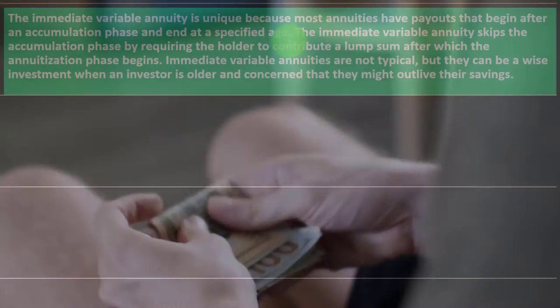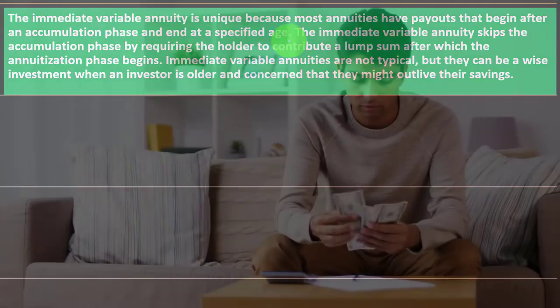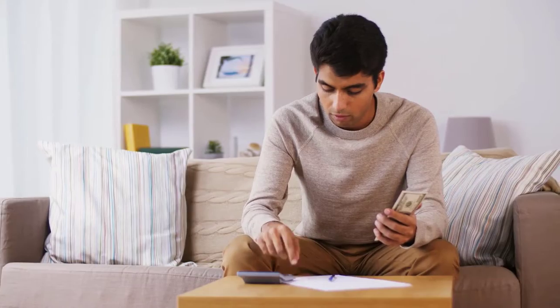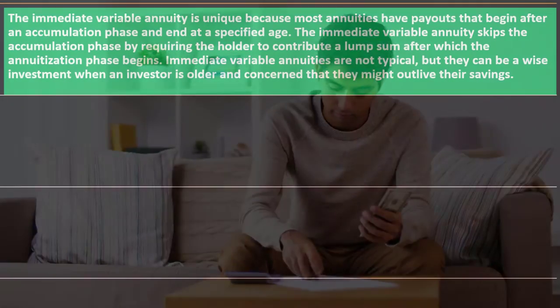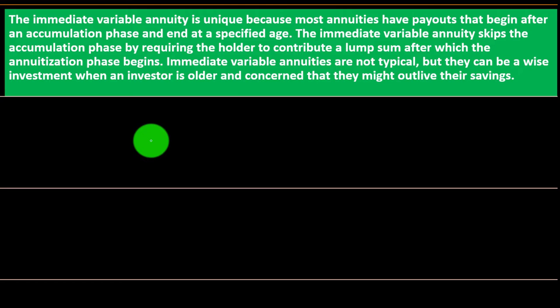Basically, if they have an ending date, they can calculate things up front. But if the annuity is going to vary, start paying off immediately, and go for your entire life, there are more unknown factors requiring estimates. The immediate variable annuity skips the accumulation phase by requiring the holder to contribute a lump sum, after which the annuitization phase begins.